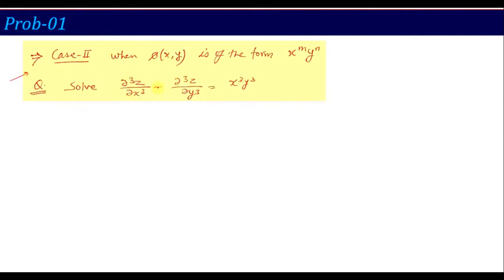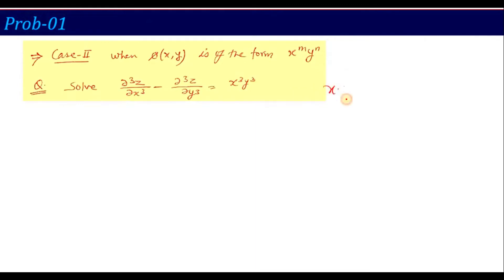A typical question for this case would be: del³z/∂x³ minus ∂³z/∂y³ equals x³y³. If it were x plus y whole cubed, that would be the first case — the AX plus BY term we studied before. But here, since it is x into y form, this is Case 2, where the right hand side function is of the form x to the power M and y to the power N.